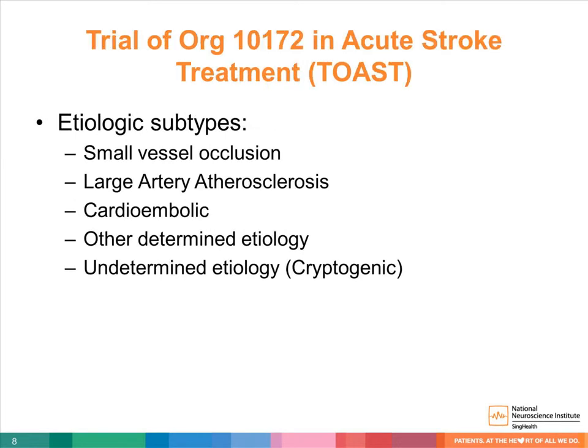We now come to the etiologic TOAST classification. TOAST classification originated from a clinical trial investigating the use of a low molecular weight heparinoid in acute stroke patients. Although that trial did not show benefit, its etiologic classification of stroke remains widely used today. The categories are: small vessel occlusion, large vessel atherosclerosis, cardioembolic, other determined etiology, and undetermined etiology or cryptogenic stroke.